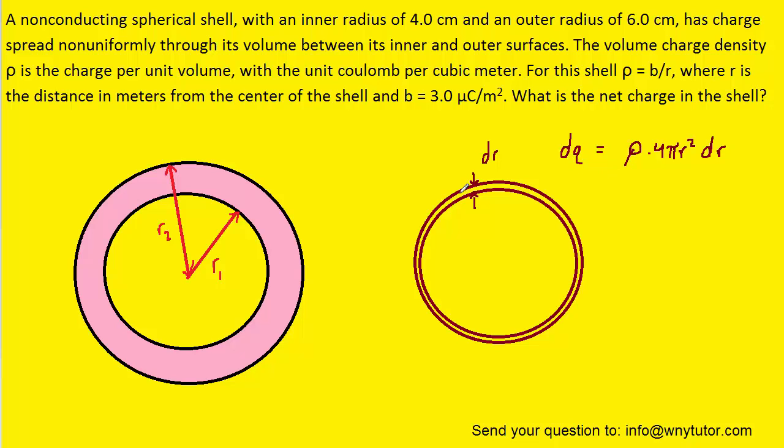So we have an expression for the amount of charge present in a very thin shell. What we have is not just a very thin shell, but actually a much thicker shell, whose thickness is denoted in the picture. So what we have to do is take a series of these very thin shells whose charge we just derived and add them all together.